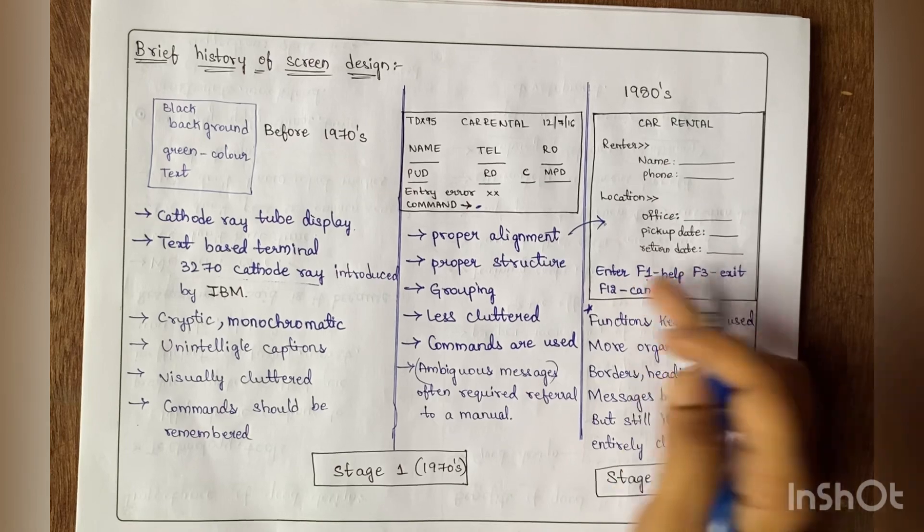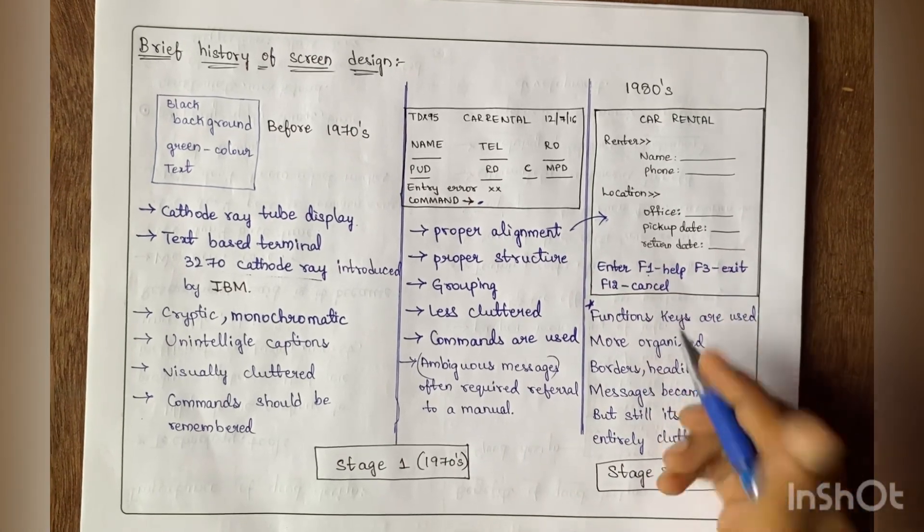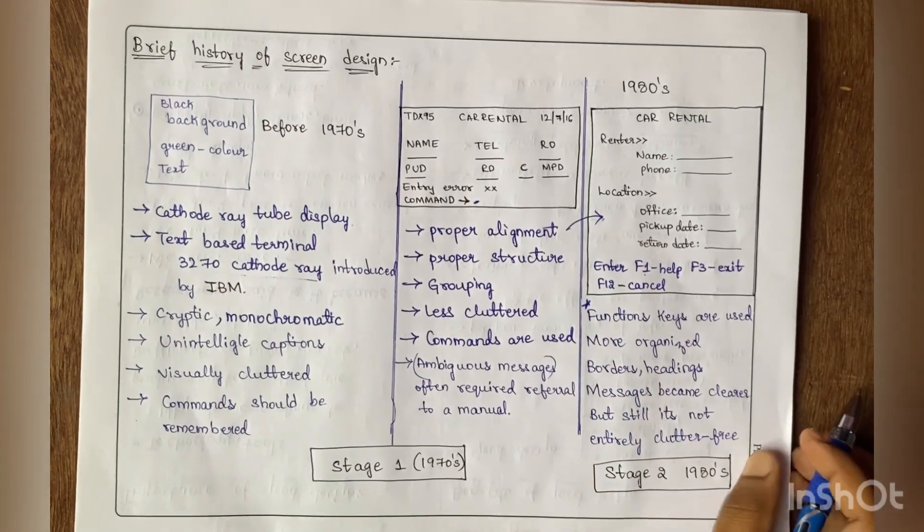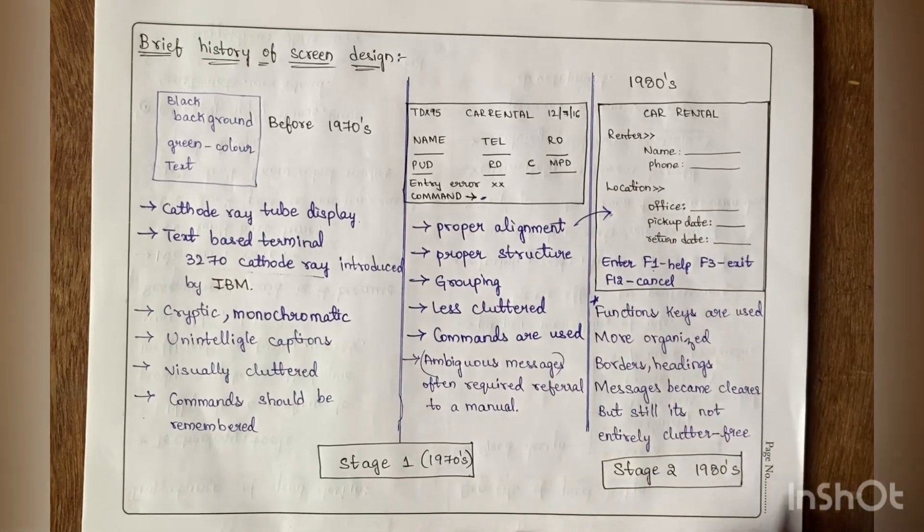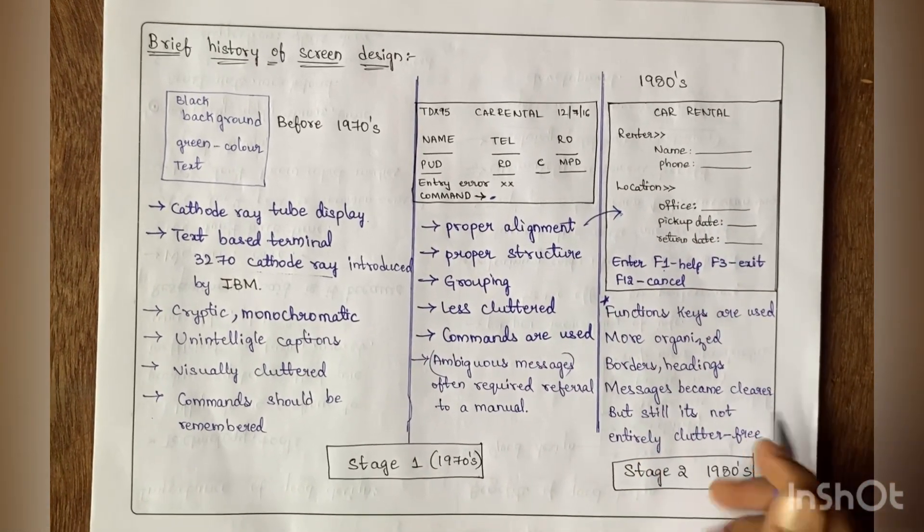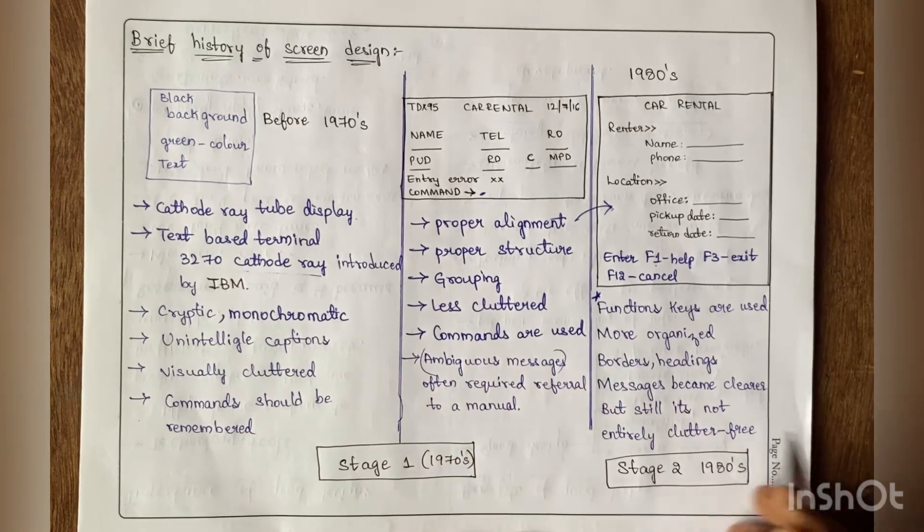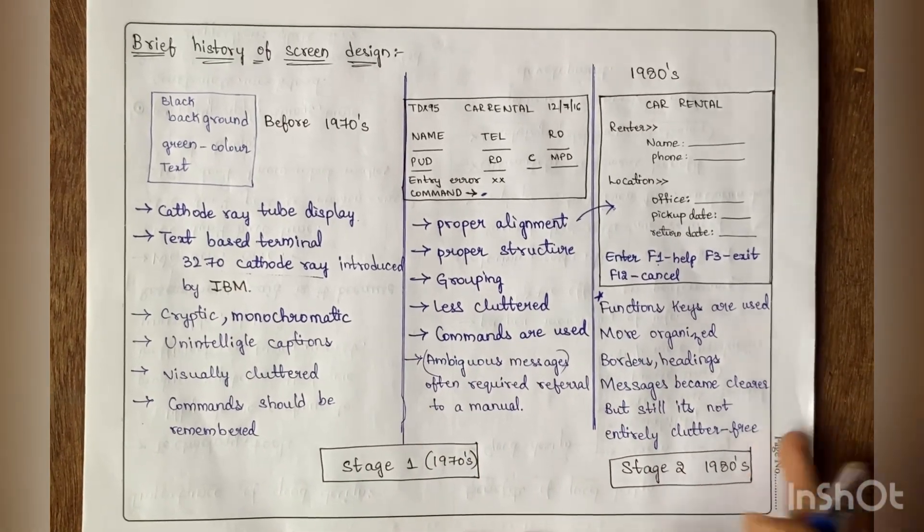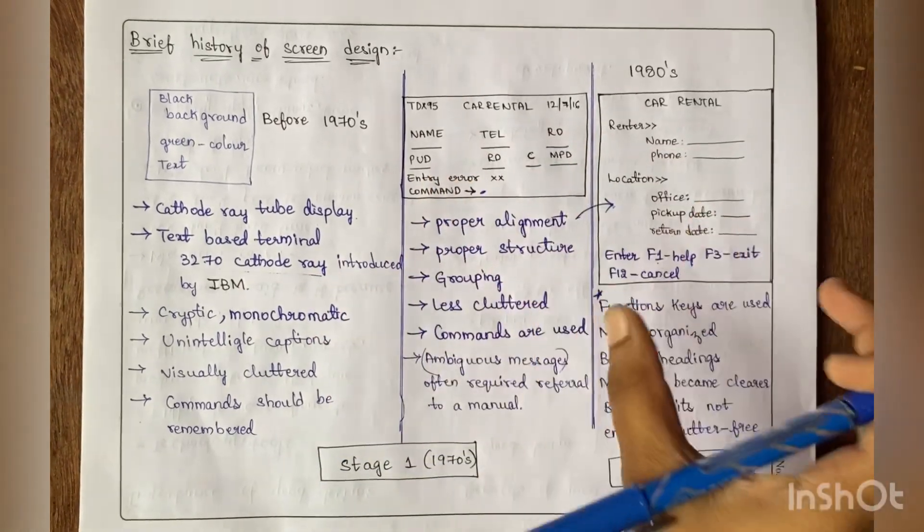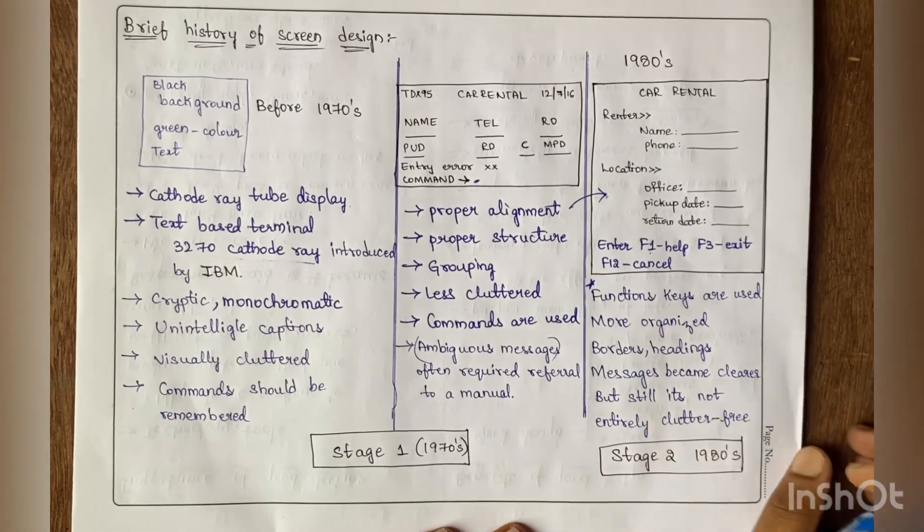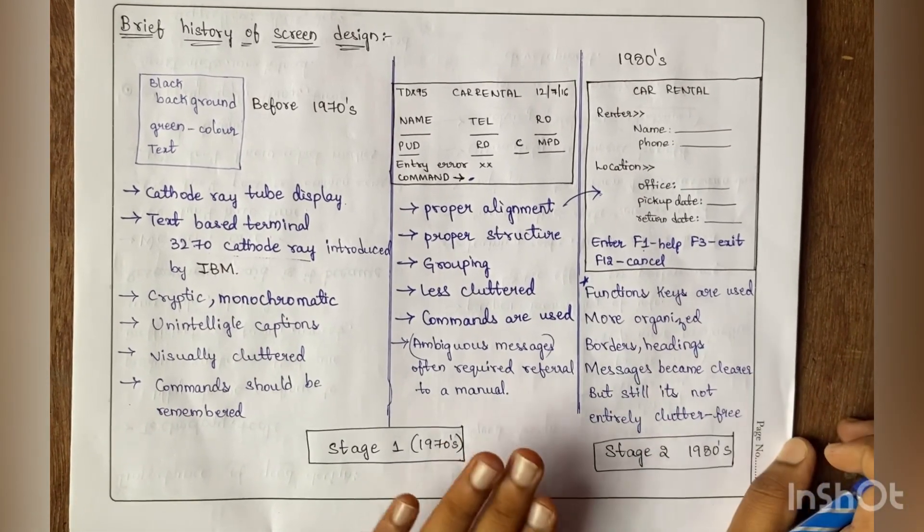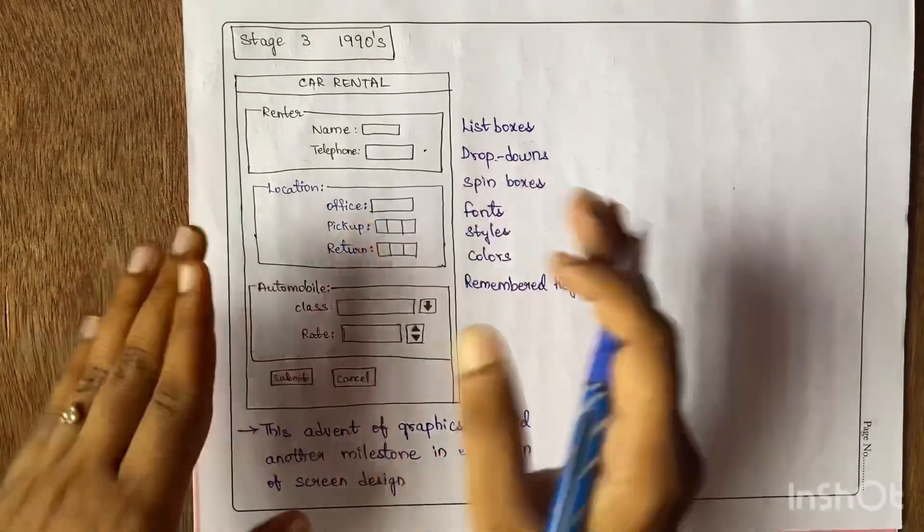They gave options like Help (F1 key), Exit (F3), and Cancel (F2). It was somewhat more organized compared to the previous one, with borders and headings. Messages became clearer, but still not entirely. Compared to Stage 1, it was better in organization, structure, and alignment, though messages were still not completely clear. Coming to the final